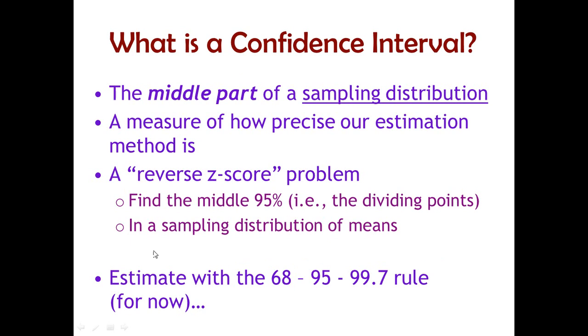Now, for now, we can estimate that middle 95% with the 68, 95, 99.7 rule, because 95%, more or less, pretty close to 95% of the observations or the area in any distribution is located between the points two standard deviations below the mean and two standard deviations above, as long as that distribution is normal.